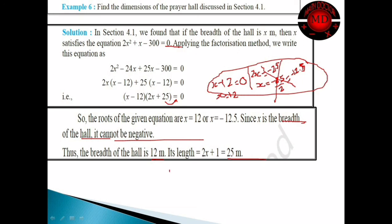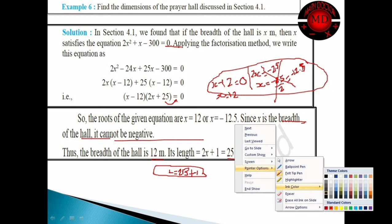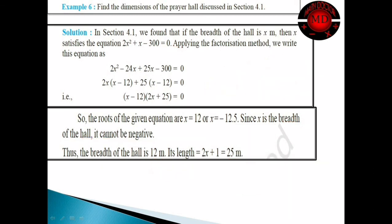Since x is the breadth of the hall, as discussed earlier, it cannot be negative. So we discard x equals minus 12.5. Therefore x equals 12 is our answer. Thus the breadth is 12, and the length becomes 2x plus 1 equals 2 into 12 plus 1 equals 25. This is the question we solved for length and breadth, where the length is one more than twice the breadth.